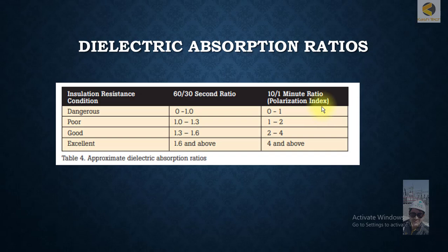When you have these ratios, there is a condition chart for insulation resistance. Based on the value you get, you can classify the equipment's healthiness. For example, if you're getting a ratio of 1.6 and above, it indicates excellent condition.